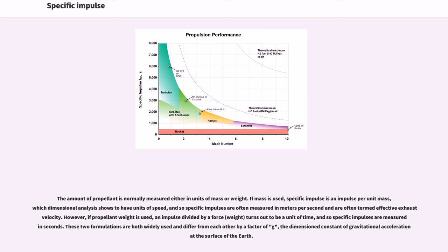The amount of propellant is normally measured either in units of mass or weight. If mass is used, specific impulse is an impulse per unit mass, which dimensional analysis shows to have units of speed, so specific impulses are often measured in meters per second and termed effective exhaust velocity. However, if propellant weight is used, an impulse divided by a force yields a unit of time, so specific impulses are measured in seconds. These two formulations differ from each other by a factor of g, the gravitational acceleration at the surface of the Earth.